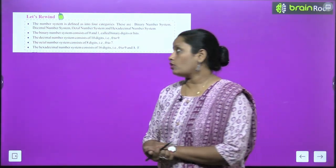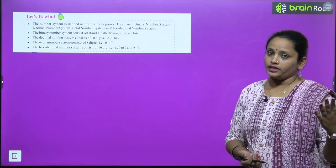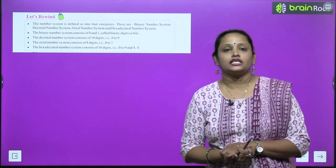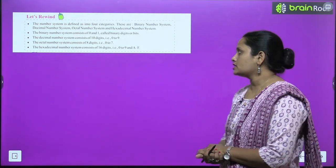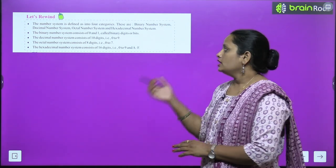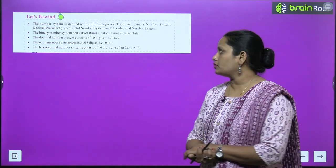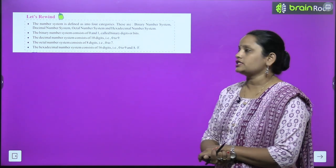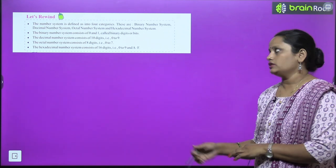Let's revise what we have learned. The number system is defined in 4 categories: binary number system, decimal number system, octal number system, and hexadecimal number system. The binary number system consists of 0 and 1 called binary digits. The decimal number system consists of 10 digits (0 to 9). The octal number system consists of 8 digits (0 to 7). The hexadecimal number system consists of 16 digits: 0 to 9 and A to F.